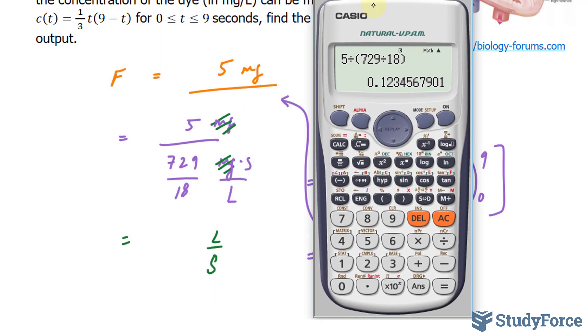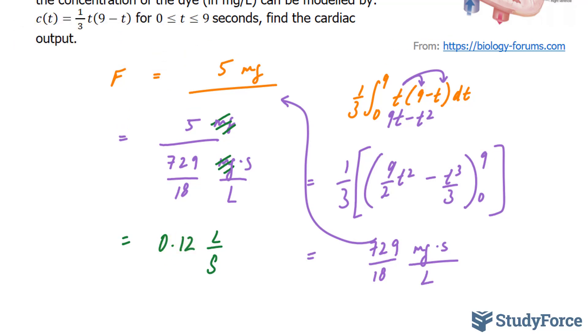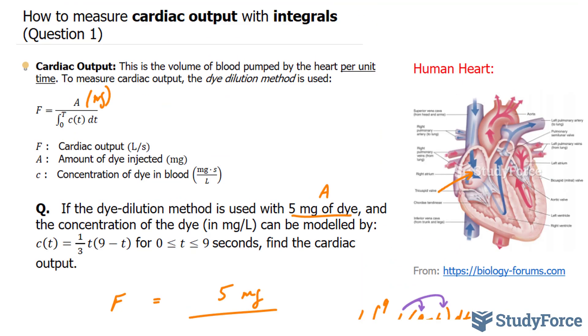And the calculation is shown on your screen. 5 divided by this quotient gives us 0.1234 or 0.12 liters per second. There you have it. That is how to measure cardiac output with integrals. Make sure to watch question 2 for another similar type of example.